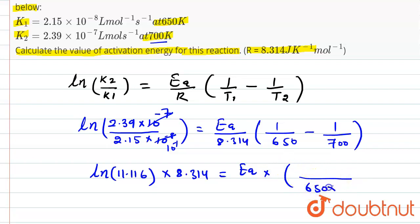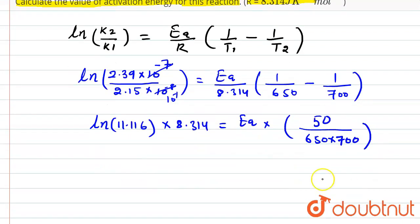LCM will be 650 and 700. And in the upside it will be 50 only, that's 700 minus 650, so 50 only. Now for the activation energy Ea, so Ea will be equal to